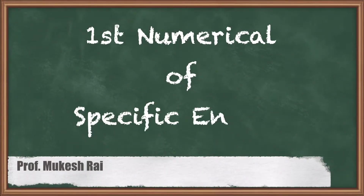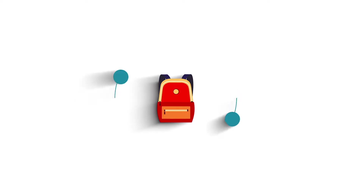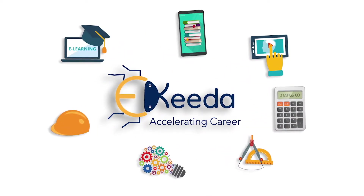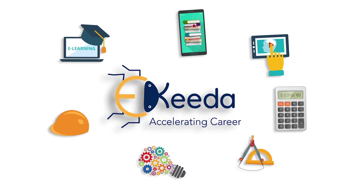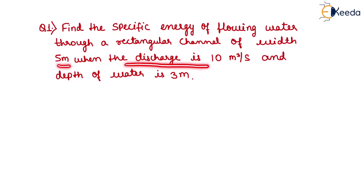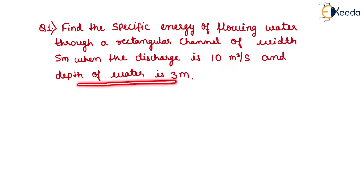Hello students, today we are going to solve the first numerical of specific energy. The question is given as: find the specific energy of flowing water through a rectangular channel of width 5 meters, when the discharge is 10 cubic meters per second and depth of water is 3 meters.